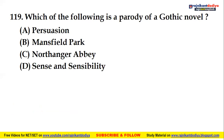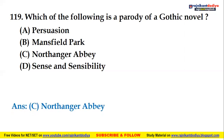Which of the following is a parody of a gothic novel? The options are Persuasion, Mansfield Park, Northanger Abbey, and Sense and Sensibility. The right answer is C — Northanger Abbey — which is a parody of a gothic novel.